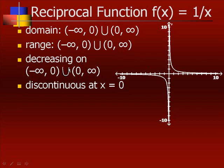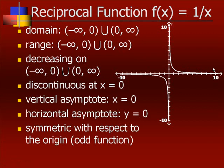It's decreasing on the interval from left to right — decreasing from negative infinity to zero, and also decreasing from zero to infinity. It's discontinuous at zero because zero is not in the domain. The vertical asymptote is x equals zero, the horizontal asymptote is y equals zero, and this graph is symmetric with respect to the origin, making it an odd function — if you folded it through the middle, you'd get exactly the same on both sides.